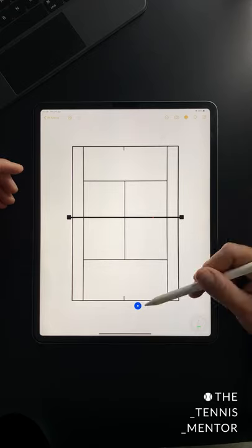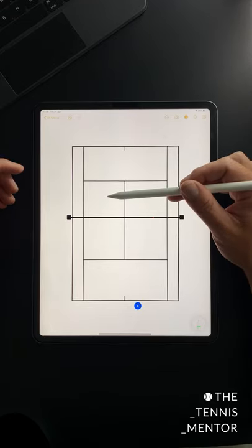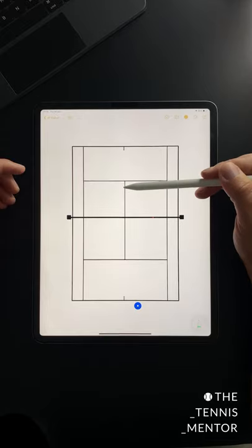It's very simple, you need to hit as many serves as you can into the correct service box whilst progressively moving from left to right.